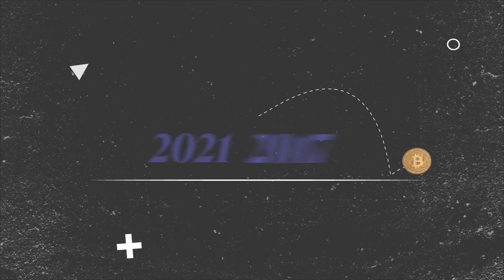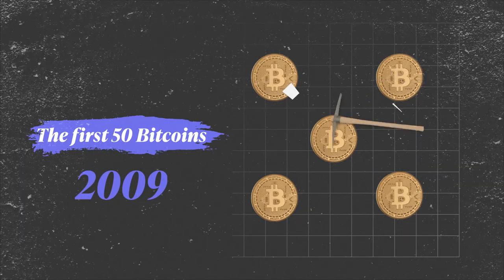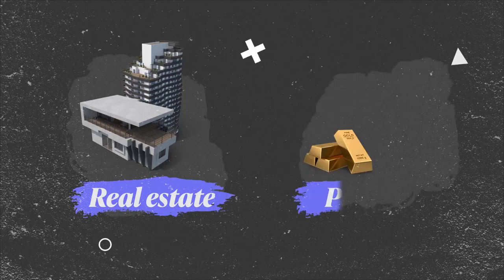Thirdly, the crypto market is still relatively young and small compared to traditional markets. The first 50 Bitcoins, for instance, were mined in 2009, hence lacking the trade history of traditional assets like real estate or precious metals.